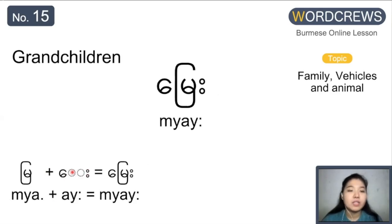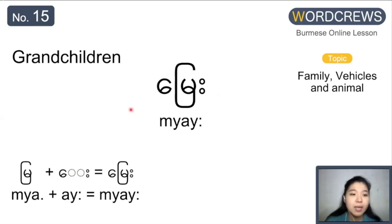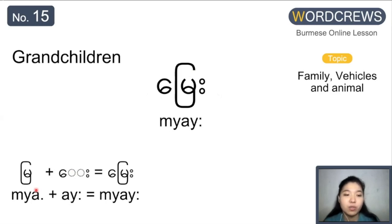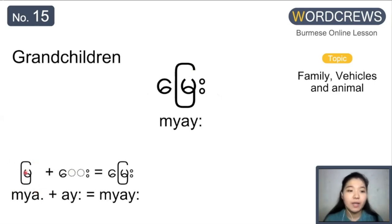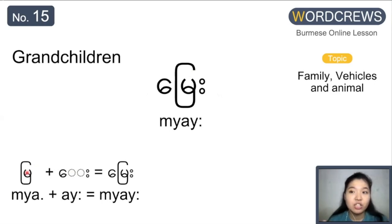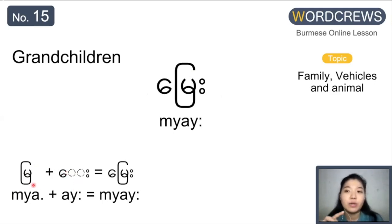Next one is grandchildren. Grandchildren is ni. It's only one syllable. Here we separate out the consonant sound. This one is ni ya — a combination of ya and ma alphabet — so it's pronounced ni ya. And the next one is a consonant symbol, so a and ni ya — we actually pronounce ni. That's all.